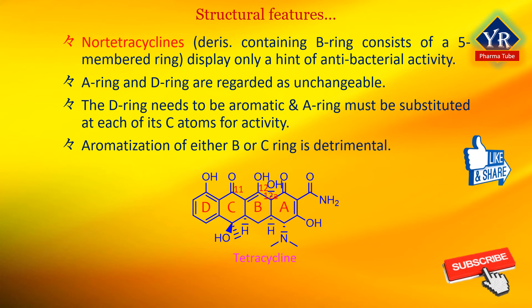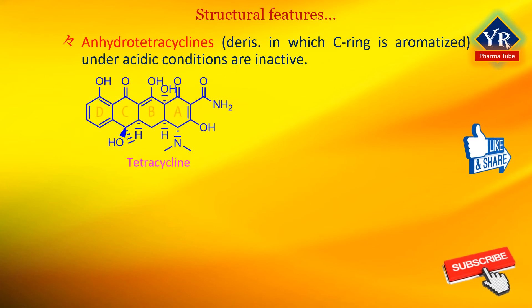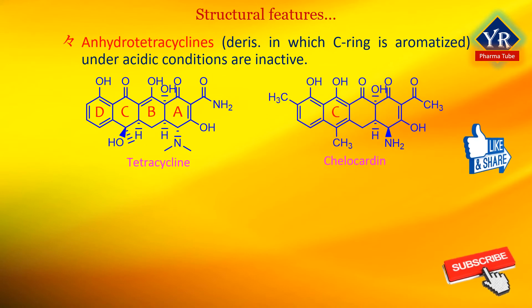Aromatization of either the B ring or the C ring is detrimental. Enhydrotetracyclines — derivatives in which the C ring is aromatized — are ubiquitous by-products under acidic reaction conditions and are essentially inactive. One notable exception is the naturally occurring kilocardines, which structurally resemble enhydrotetracyclines, but their substitution patterns, spectrum of activity, and biosynthetic origin are different from the tetracyclines.